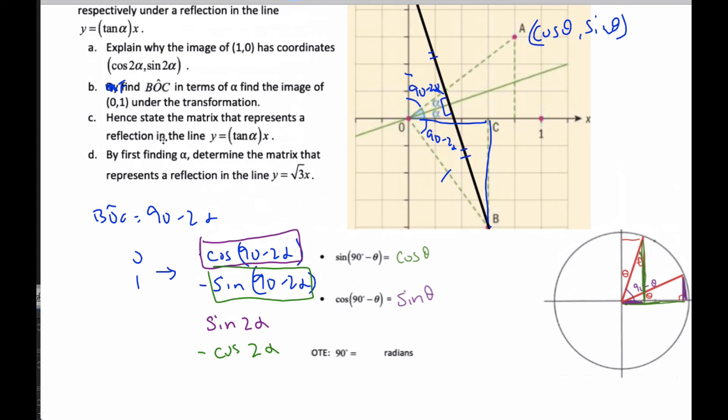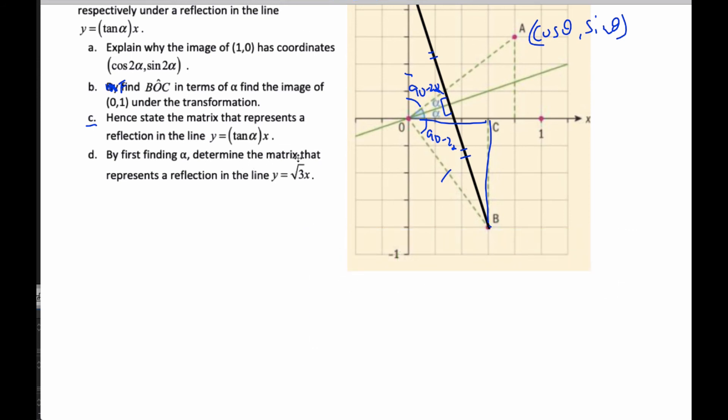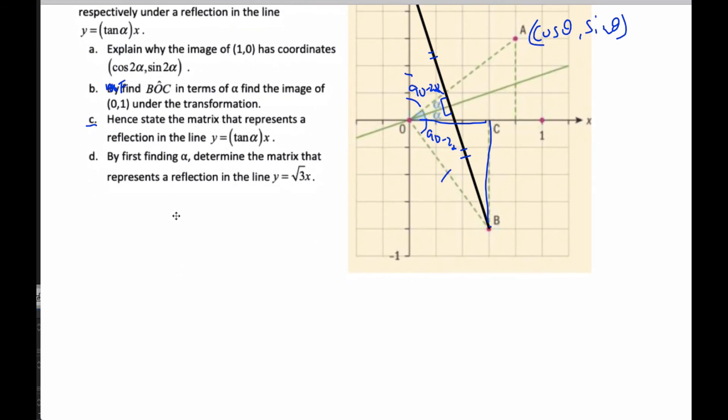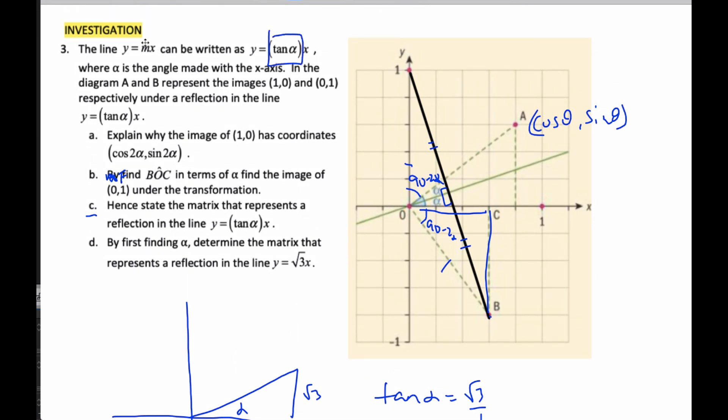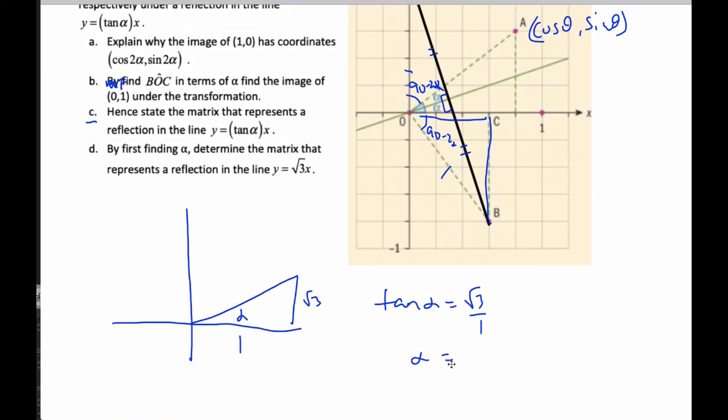Okay, so now part C says by first finding alpha, determine the matrix that represents a reflection in the line root 3 of x. If I have root 3 of x, there's some line here. So I go rise of root 3, run of 1, rise over run. So this here is my alpha. And so tangent of alpha is equal to the square root 3 over 1, and I can also get that straight from here. Tangent is equal to whatever the slope is. And so then if I find alpha, I can just put that in my calculator, and I get 60 degrees.